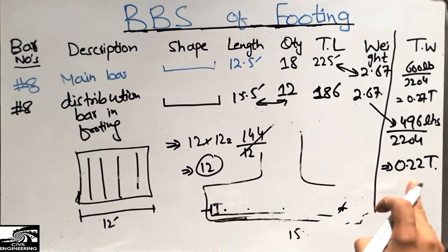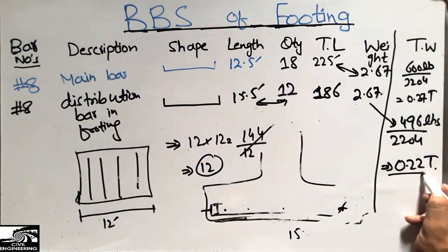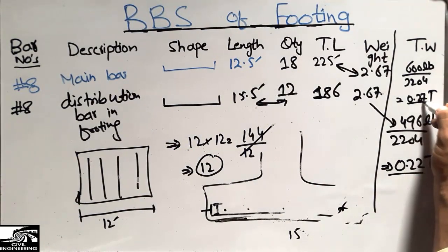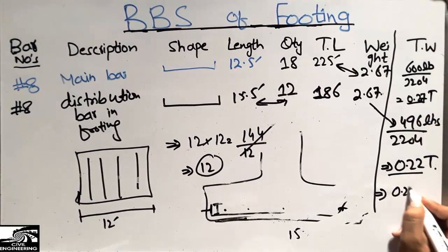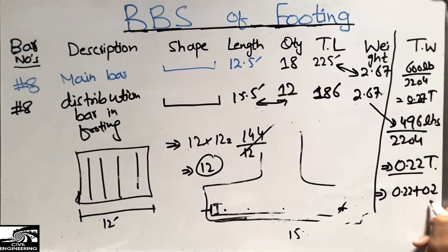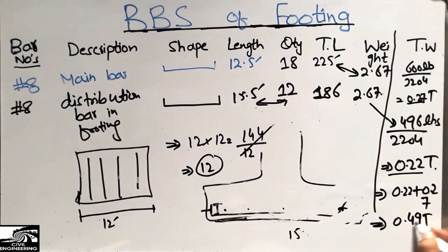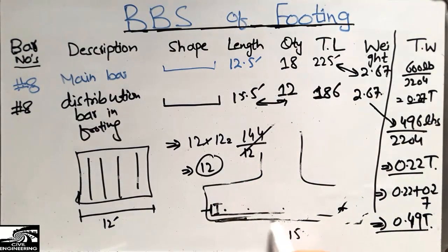The weight of the distribution bar is 0.22 tons. Adding the main bar weight of 0.27 tons and the distribution bar weight of 0.22 tons gives a total weight of 0.49 tons — almost 0.5 tons of reinforcement used only in this footing.